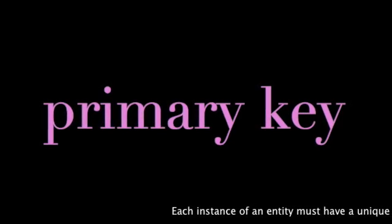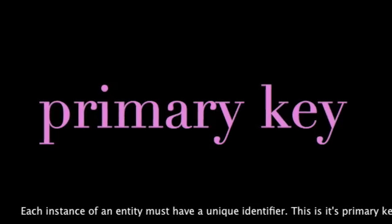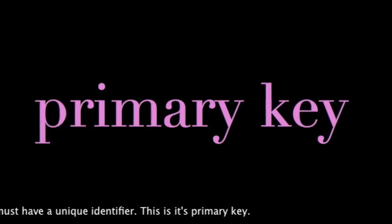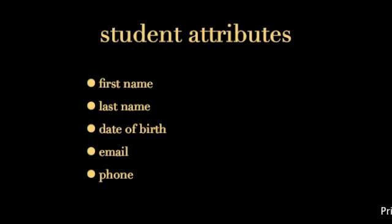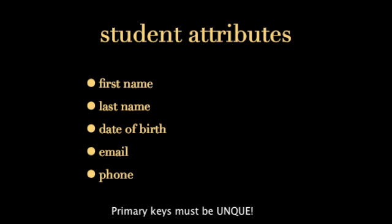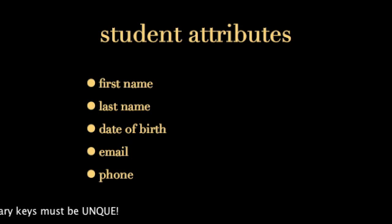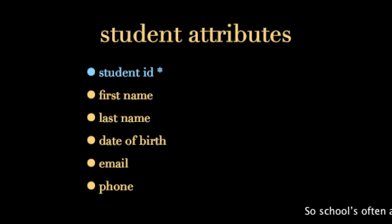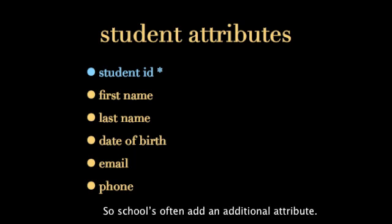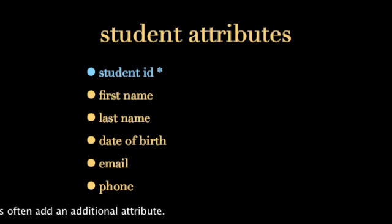Each instance of an entity must have a unique identifier — this is its primary key. Primary keys need to be unique, and none of these attributes are. So it's common for a school to add an additional attribute, the student ID, to serve as the primary key.